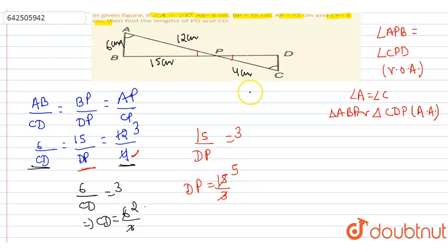So the answers are, the length of PD is 5 cm and the length of CD is 2 cm. Thank you.